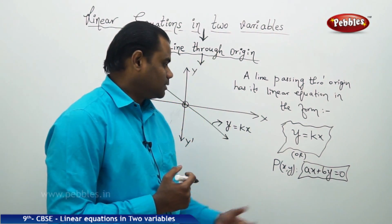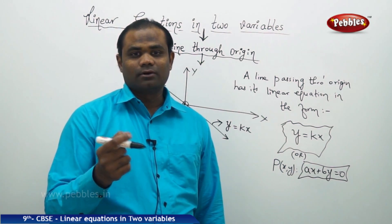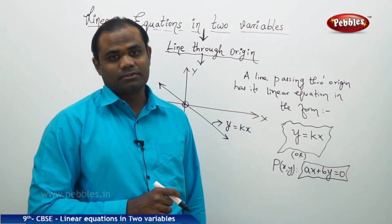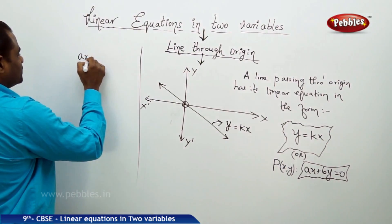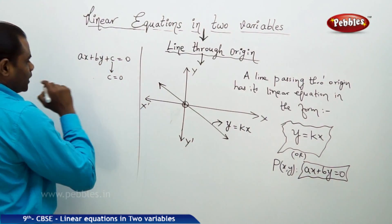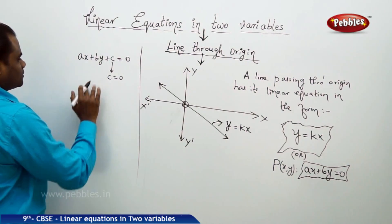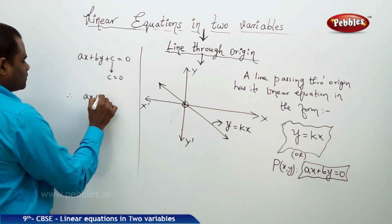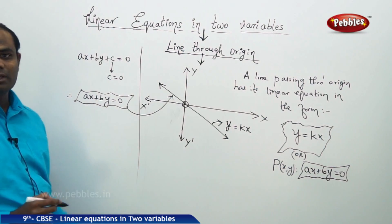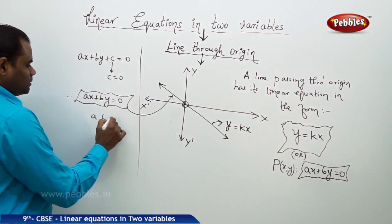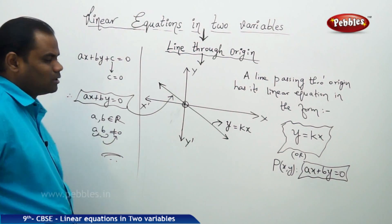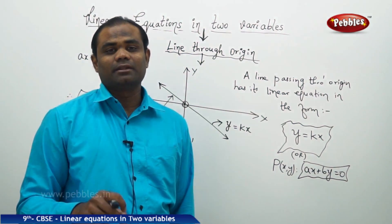The learning outcome here is that when a line or a linear equation passes through origin in the xy coordinate system, its constant value vanishes. Therefore, if I have the general linear equation ax plus by plus c equal to 0, this constant c vanishes when it passes through origin. Therefore, a line which passes through origin would be in the form ax plus by equal to 0, with a and b belonging to real numbers and both non-zero.